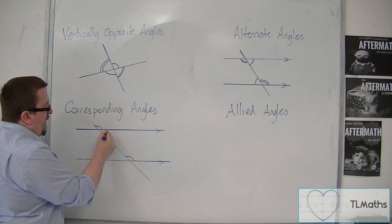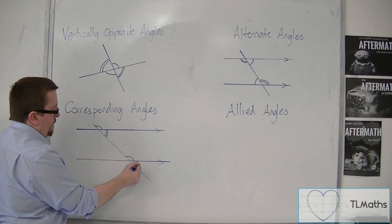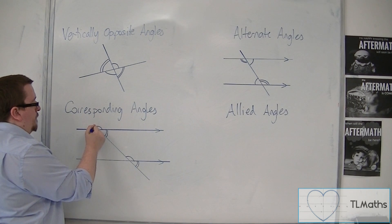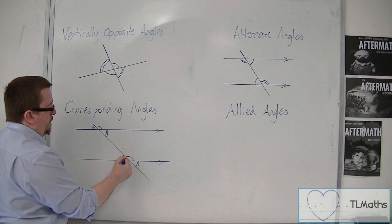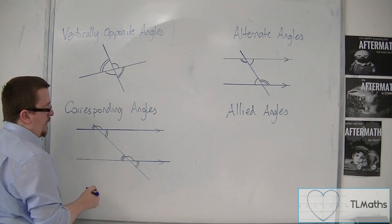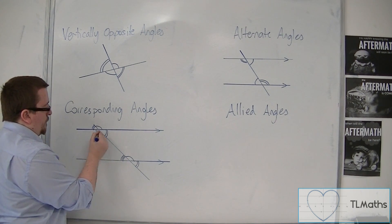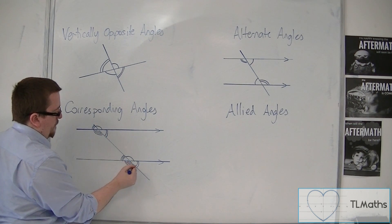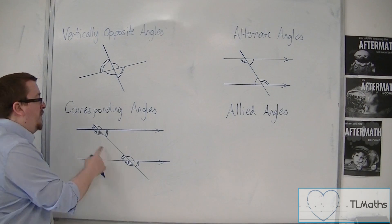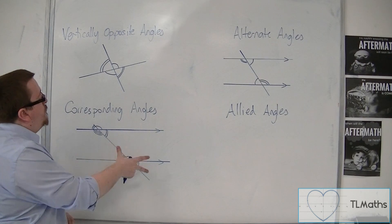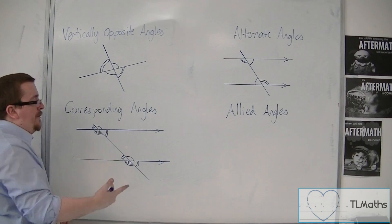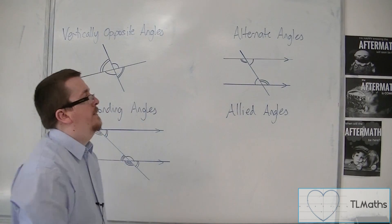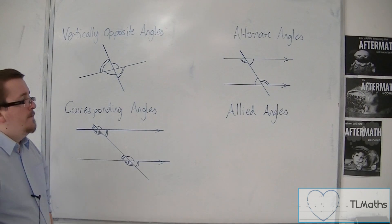Likewise, this angle corresponds with that one. And this one corresponds to this one. So corresponding angles are equal. So you might have heard this being referred to as an F angle, so you've kind of got this F shape. And likewise, this was a Z angle. You might remember it that way.